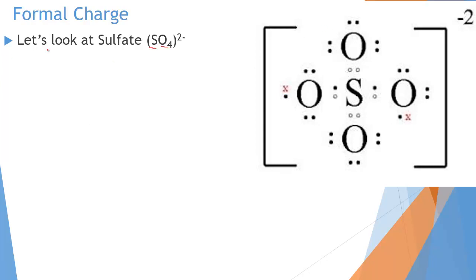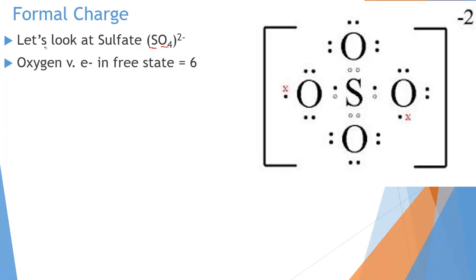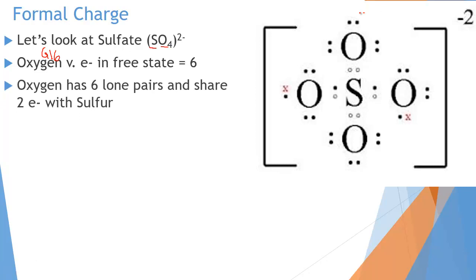So if we break down the formal charge and look at something like sulfate, we're going to look at oxygen first and calculate its formal charge in this version of sulfate. Since every oxygen is the same — all four oxygens have a single bond to sulfur with three lone pairs around them — I'll do one calculation. Oxygen is in group 16, so in its free state from the periodic table it has six valence electrons. In the compound, every oxygen has six lone electrons — three lone pairs — along with one shared pair, which is two shared electrons.